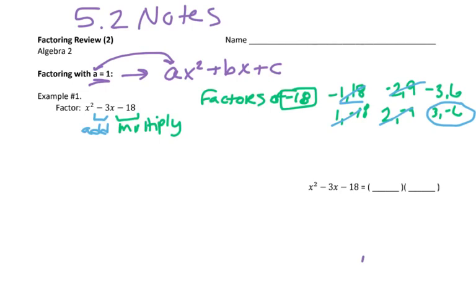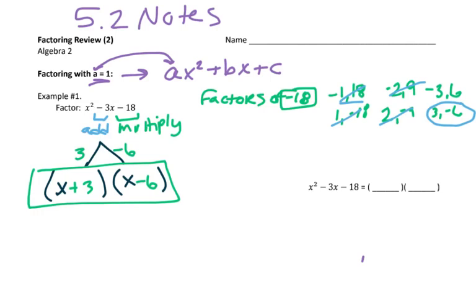So that means that those are the pieces that will go into our factors. So we're going to have an x plus or minus a number, and then another x plus or minus a number. And those numbers are going to be a 3 and a negative 6. So we have x plus 3 and x minus 6. And that is our factor set that would potentially expand to be x squared minus 3x minus 18.